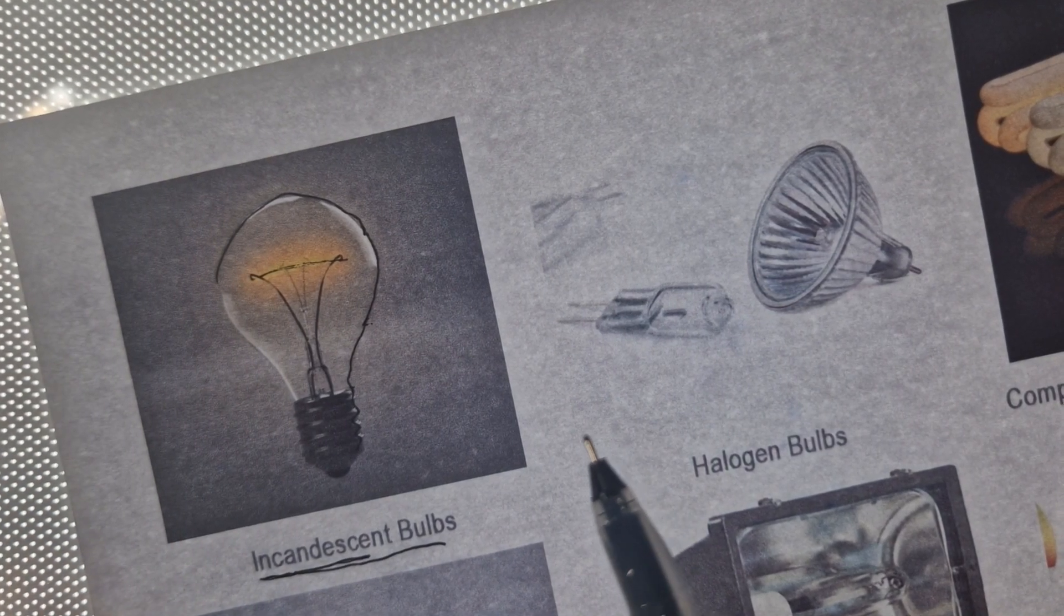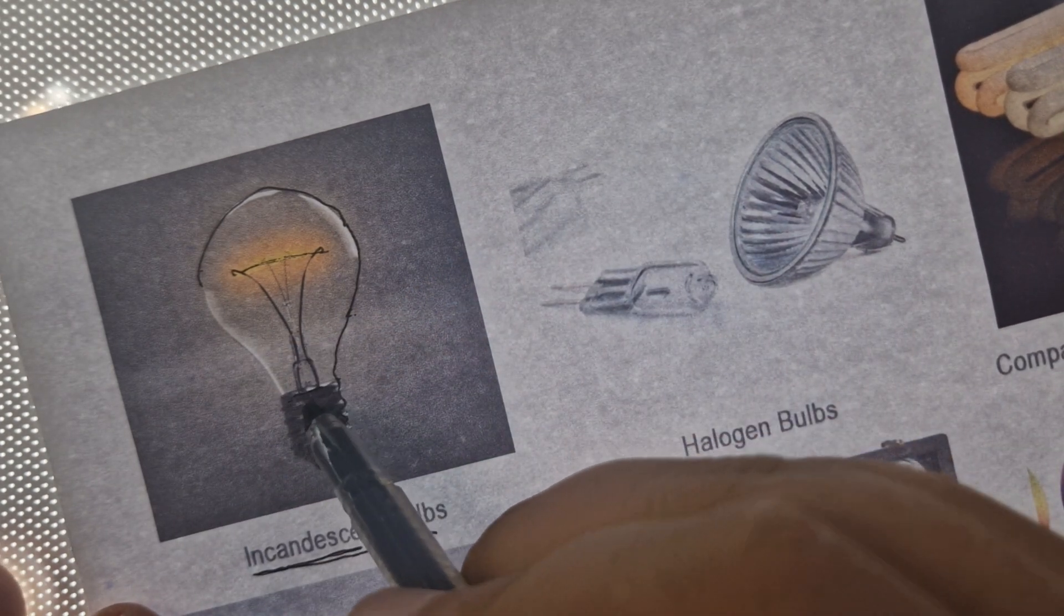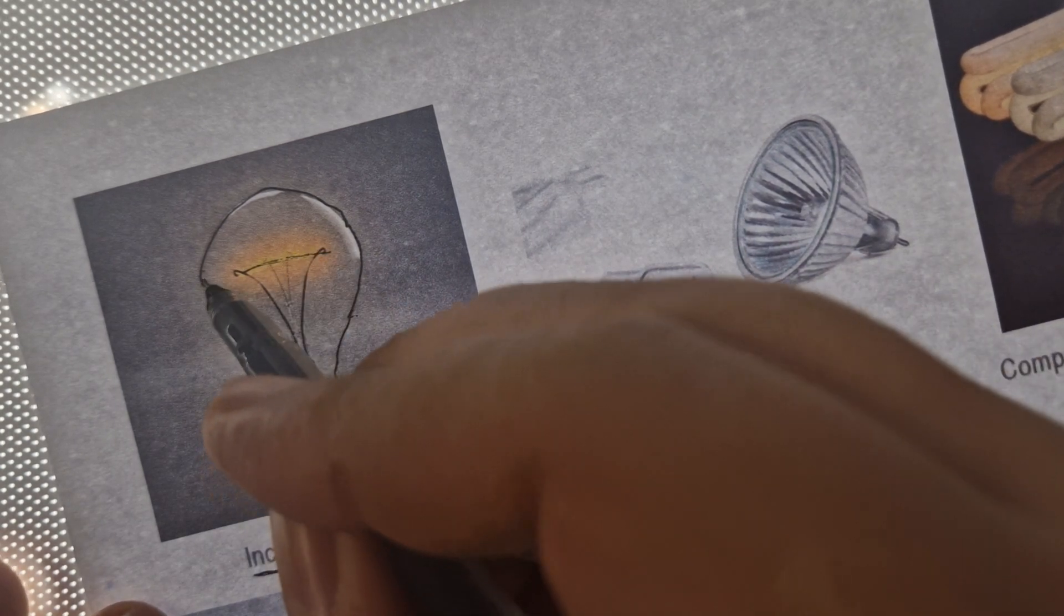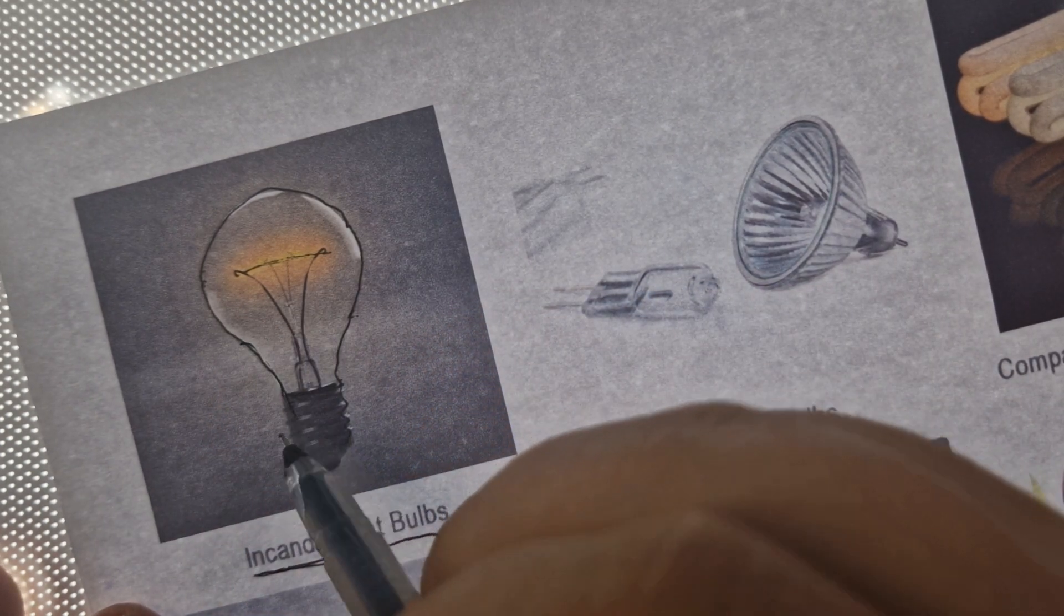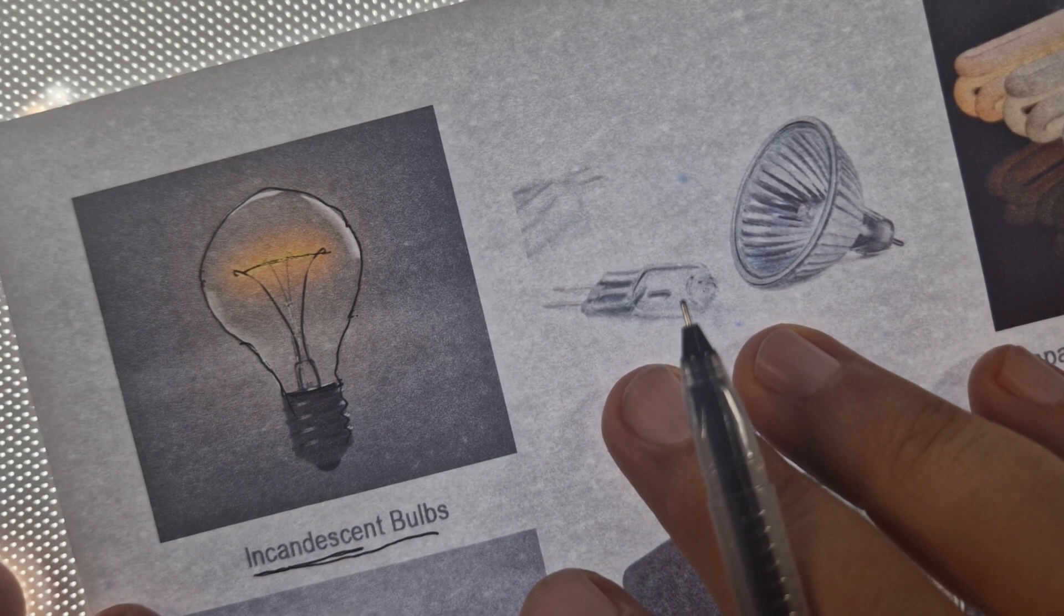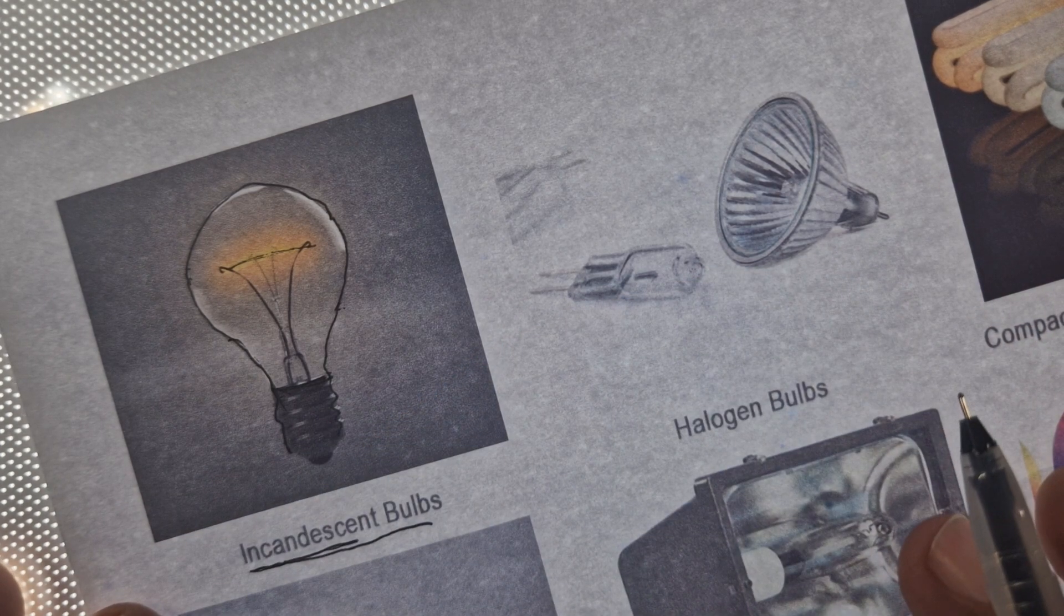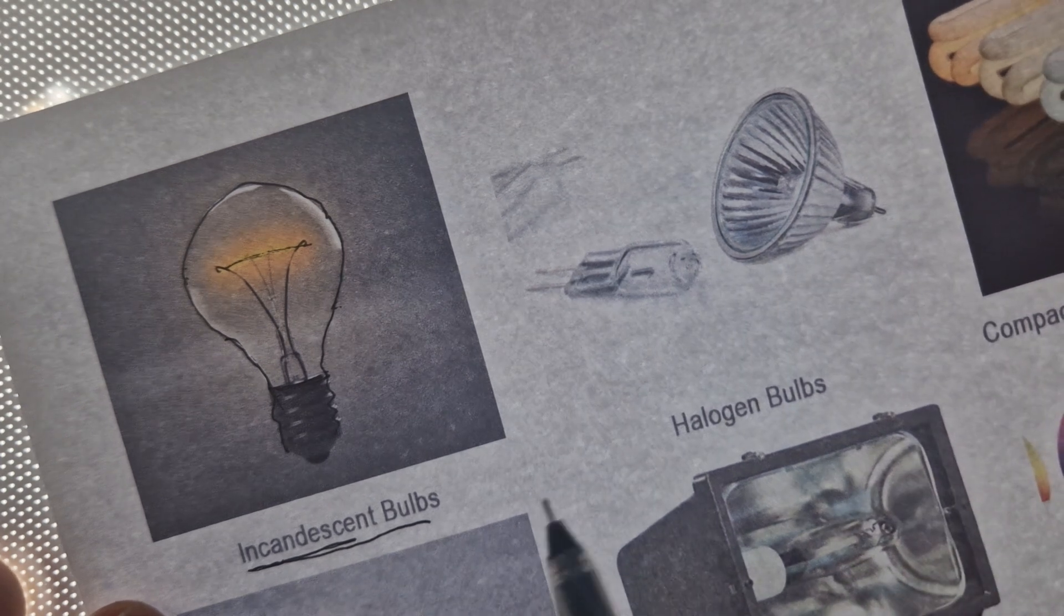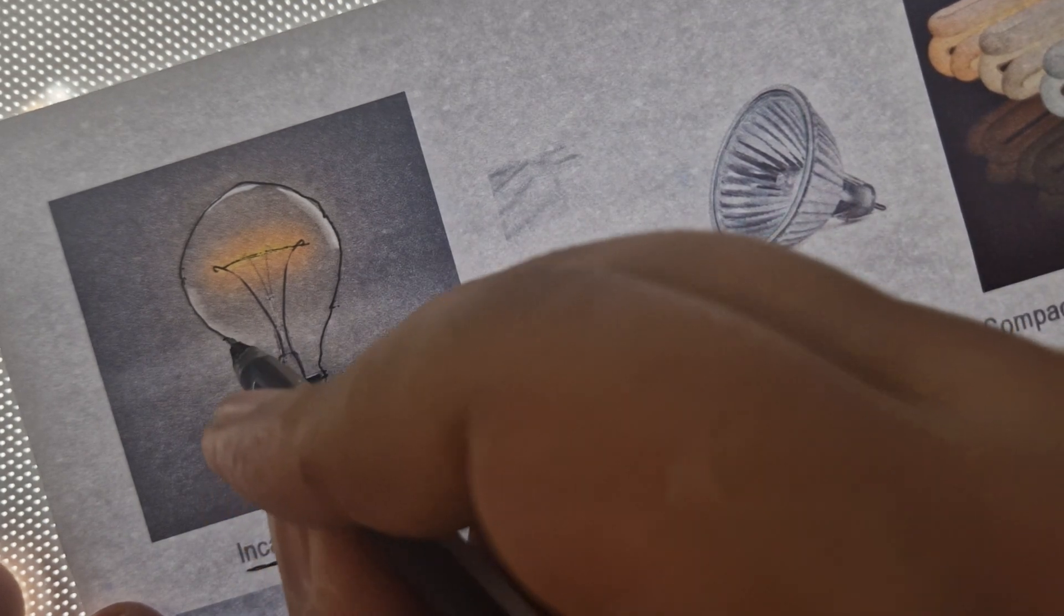This is the classic light bulb. There are some pros and cons. The pros: it's the most inexpensive, produces warm light, and has good color rendering. The cons: it's inefficient compared to others, consuming more power. It has a shorter life span and generates more heat than others that we're going to study.